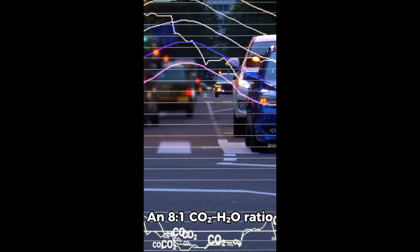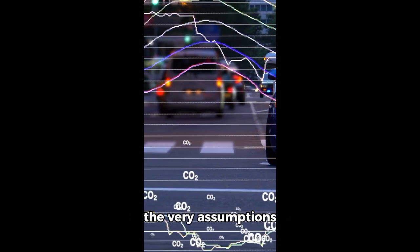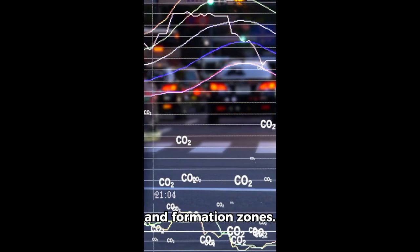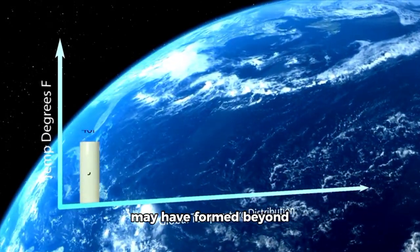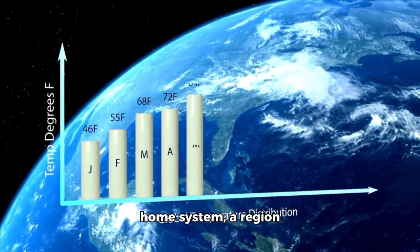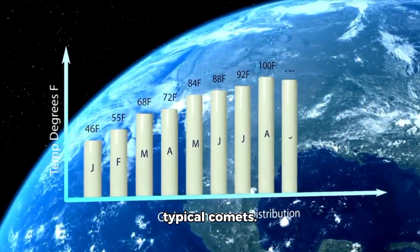An 8 to 1 CO2-H2O ratio is not just uncommon, it challenges the very assumptions behind comet chemistry and formation zones. This suggests 3i Atlas may have formed beyond the CO2 ice line in its home system, a region far colder than the ones that produce typical comets.